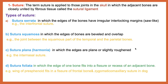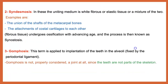Lastly, sutura foliata, where we have a fissure and the bones fit into that fissure. For example, the wings of the pre-sphenoid bone of the skull fit into a fissure of the frontal bone, and also the zygomatic-maxillary suture in the skull of the dog.